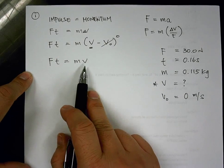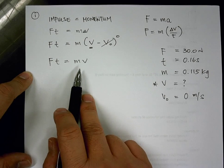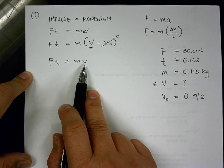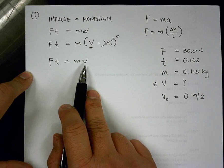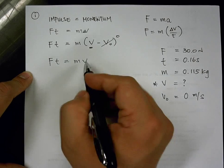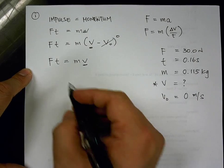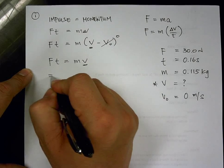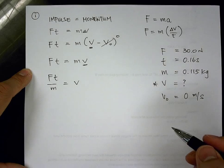Well, it usually ends up, but then, it doesn't always end up having just Ft is equal to mv, because the velocity, the initial velocity, sometimes is not zero. That's why I left it at this original form. So how am I going to solve for v? So I divide both sides by mass. So Ft over m equals v.